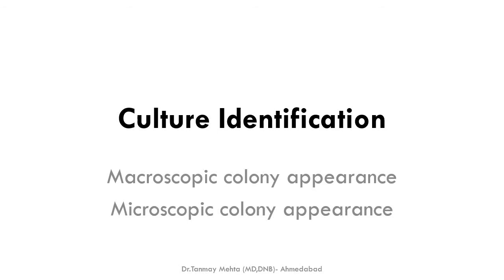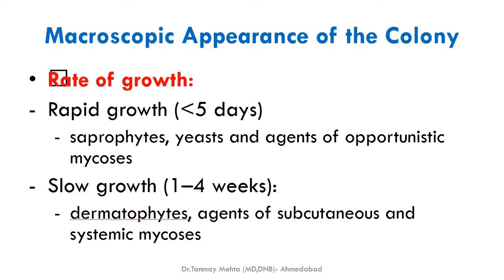Once growth appears, fungal identification uses both macroscopic and microscopic colony appearance. For macroscopic appearance, we first note the rate of growth. Most fungi take two to three weeks; if growth occurs within five days or one week, it is considered a rapidly growing fungus. Most yeasts, saprophytes, and opportunistic fungi are rapid growers, while dermatophytes and subcutaneous and systemic fungi are slow-growing, often taking more than one or even four weeks.